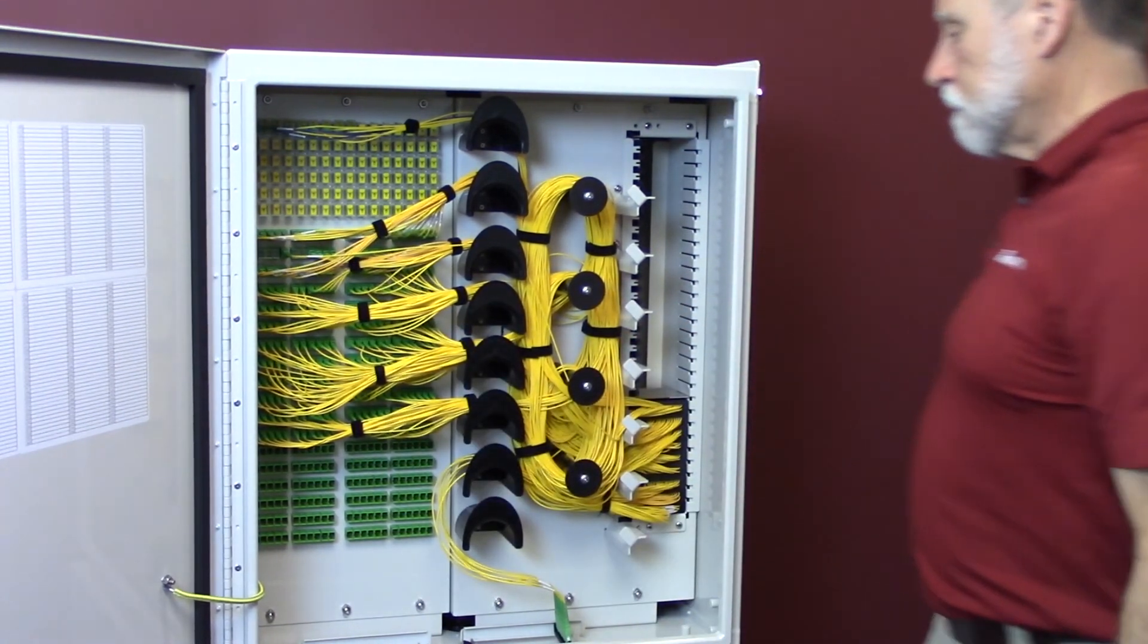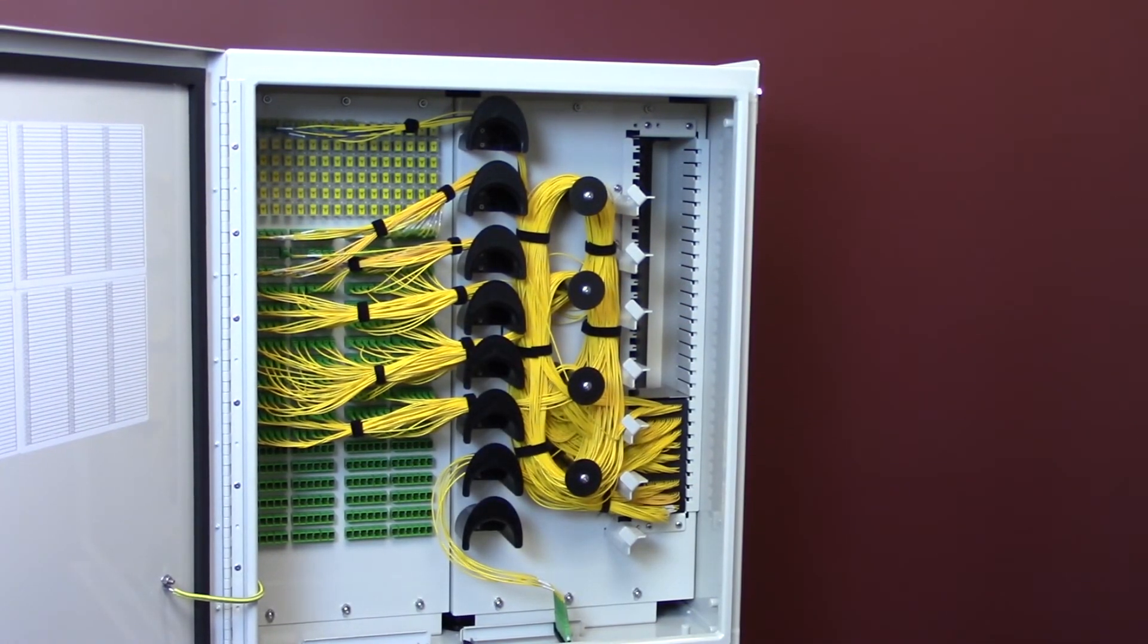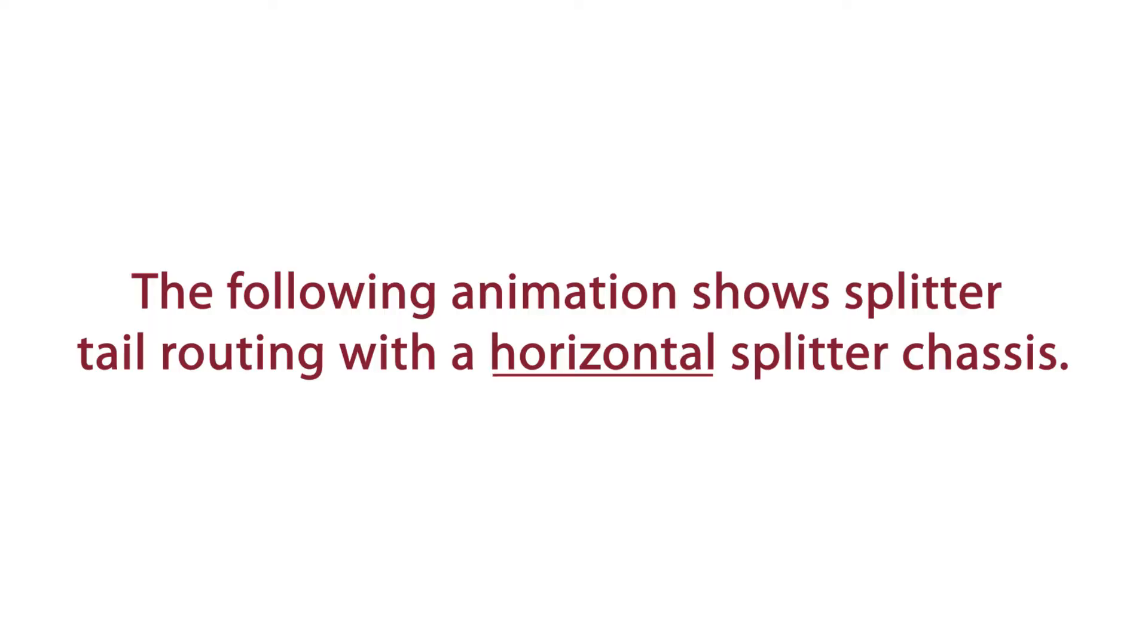Terminate the splitter tail into the appropriate distribution adapter. The following animation shows splitter tail routing with a horizontal splitter chassis.